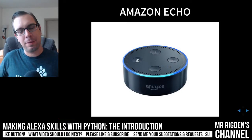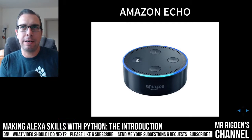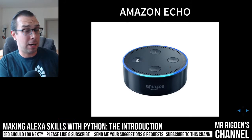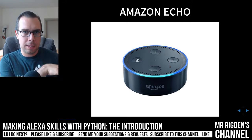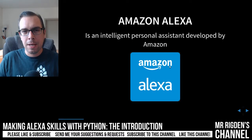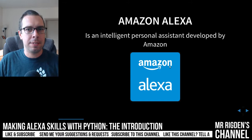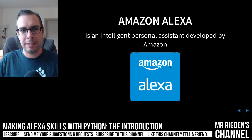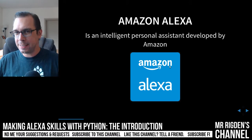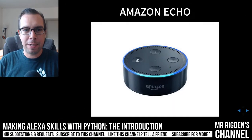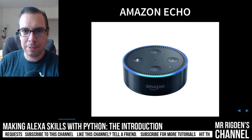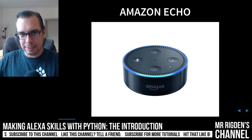This is the Amazon Echo — the actual device. The two most common ones are the Echo Dot and the Echo, the taller one. Now that is different from the Amazon Alexa service. The Amazon Alexa service is an intelligent personal assistant developed by Amazon.